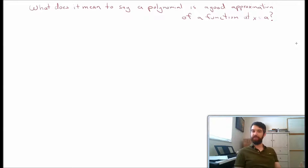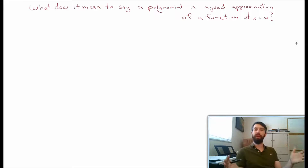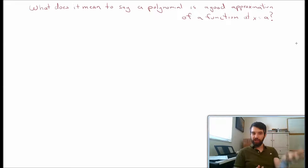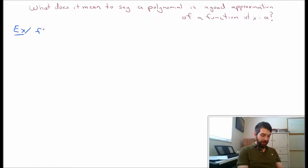Suppose we have some function, like e to the x or sine of x, and our goal is to find a polynomial that well approximates the function, or at least well approximates it around some point x equal to a. I'm going to use as an example the function f of x equal to e to the x, and I want to investigate this function around the point x equal to 0.